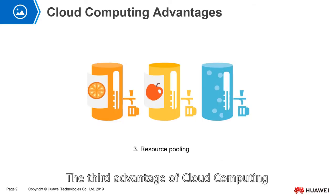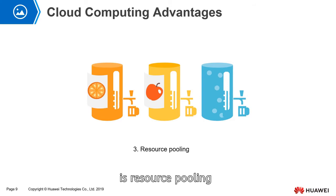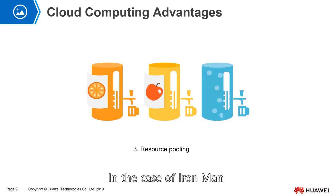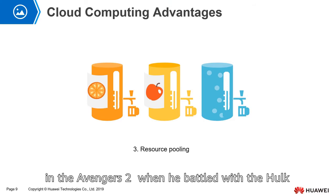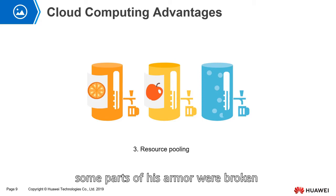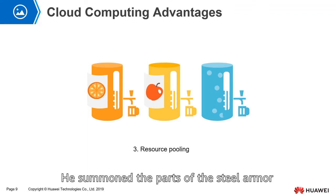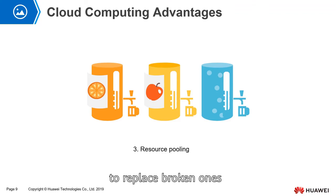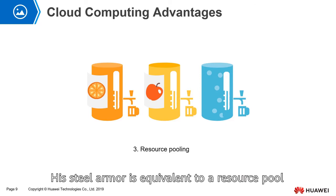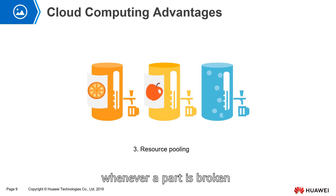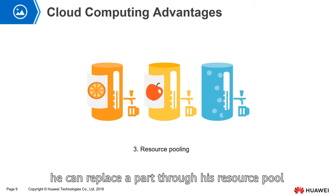The third advantage of cloud computing is resource pooling. In the case of Iron Man in Avengers 2, when he battled with Hawkeye, some parts of his armor were broken. He summoned the parts of his steel armor to replace the broken ones. His steel armor is equivalent to a resource pool — whenever a part is broken, he can replace it through his resource pool.